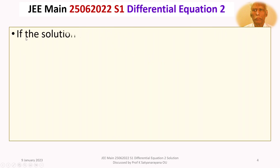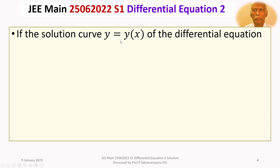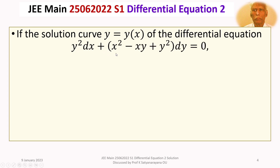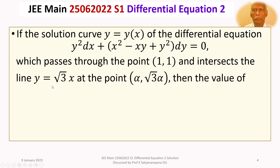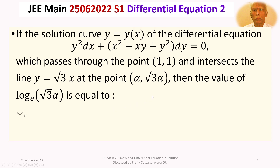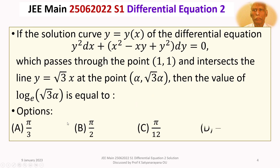The given question is: if the solution curve y = y(x) of the differential equation y² dx + (x² − xy + y²) dy = 0, which passes through a point and intersects the line y = √3 x at the point, then the value of log base e of √3 α is equal to — with options: (a) π/3, (b) π/2, (c) π/12, (d) π/6.